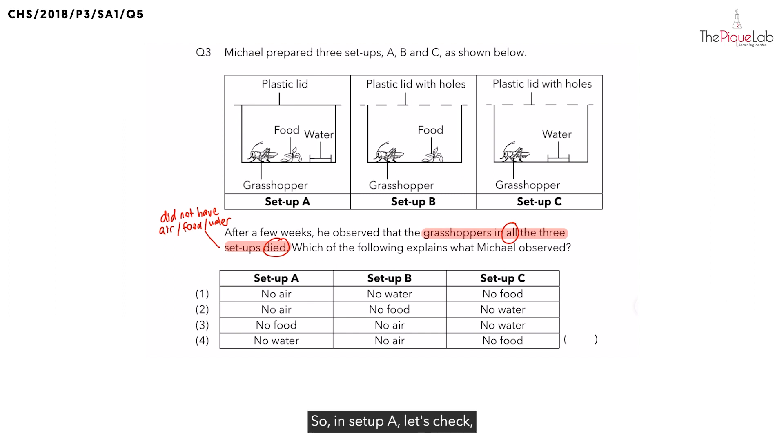So, in setup A, let's check. Did it have food? Yes, we can see that there is food. Did it have water? Also, yes. But, did it have air or not? Yes, there is actually some air inside this container. But, if you look at this container, it is covered by what? It is covered by a plastic lid. And if it's covered by the plastic lid, do you think the air from the surroundings can come in? No.